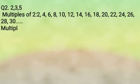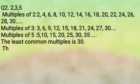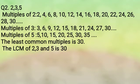The next question is 2, 3 and 5. Multiples of 2, write down the 2's table, then 3's table and then the 5's table. The least common multiple is 30. The LCM of 2, 3 and 5 is 30.